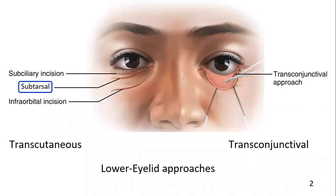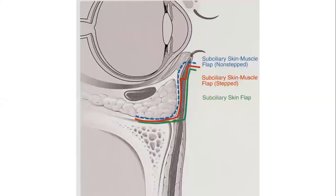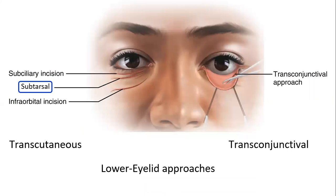Many incision techniques are available for the treatment of orbital zygomatic fractures. The major difference between them is the level at which the incision is placed in the skin of the eyelid and the level at which the muscle is dissected to expose the orbital septum or periosteum. One incision has not been clearly demonstrated to be superior to another. Converse originally described the subciliary approach to the orbit in 1944.